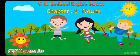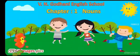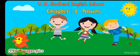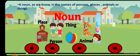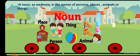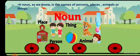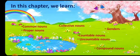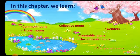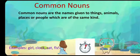Hello dear kids, today we are going to see our first grammar chapter: nouns. As we know, a noun is the name of a person, place, animal, and things. In this chapter we are going to learn about common and proper nouns, collective nouns, countable and uncountable nouns, genders of the nouns, and compound nouns. So let's get started.